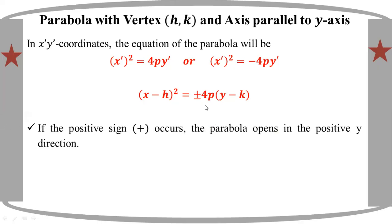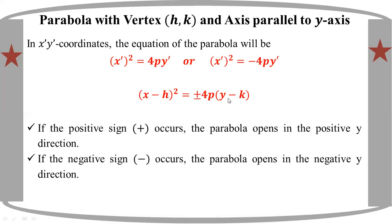If you have a plus or positive sign, the parabola opens in the positive wind direction. If you have a negative sign, the parabola opens in the negative wind direction — that is, the parabola opens down.